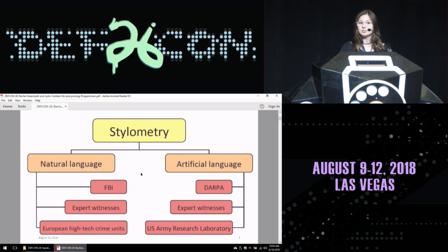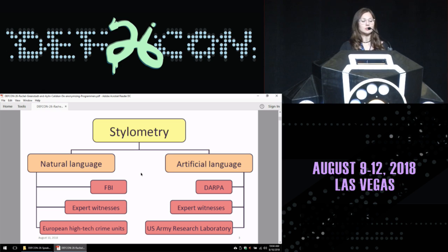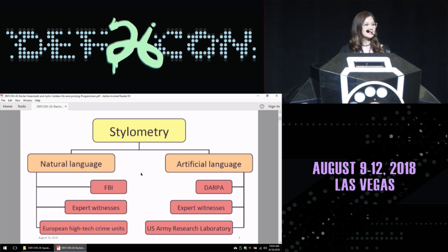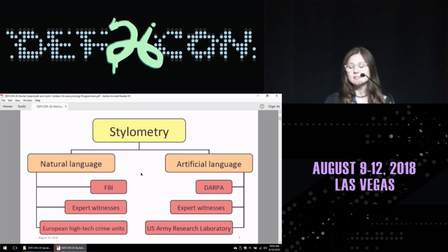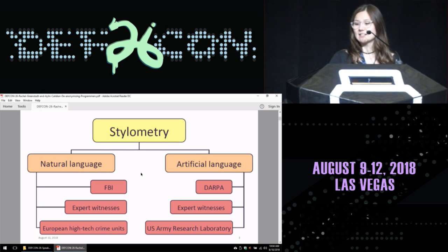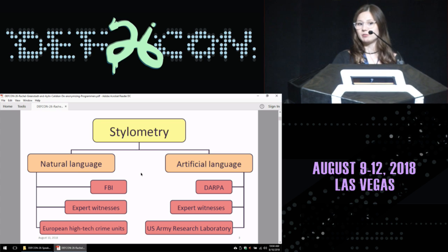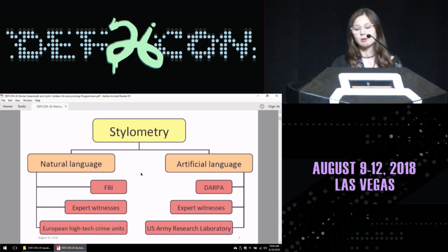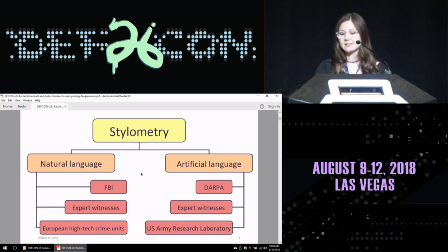Regarding artificial languages, focusing on code, DARPA is interested in this project since they are part of the Department of Defense and they might want to know the identities of malicious actors, as well as expert witnesses and the US Army Research Laboratory, which we are collaborating with. This has been an ongoing collaboration for four years now.